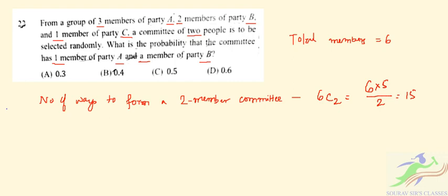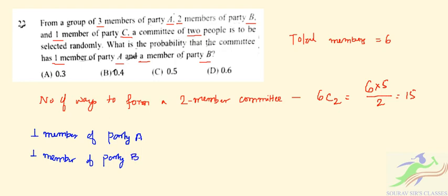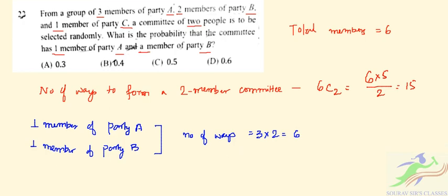Now with the condition that one member of party A and one member of party B must be in the committee, the number of favorable ways is 3 times 2, which equals 6. So the probability is 6 by 15, which equals 2 by 5, or 0.4 in decimal. The correct option for question 22 is B: 0.4.